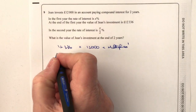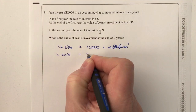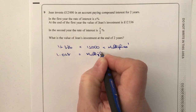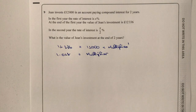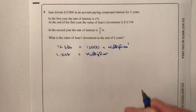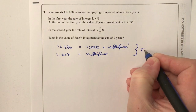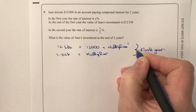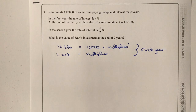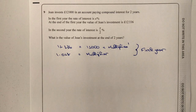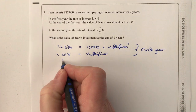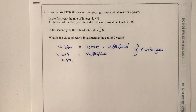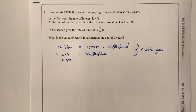If you're not sure about this please have a look at the compound interest playlist. So the multiplier of 1.028 corresponds to an interest rate of 2.8% in the first year. In the second year the interest rate is x over 2, which is half of 2.8%, giving 1.4% in the second year.